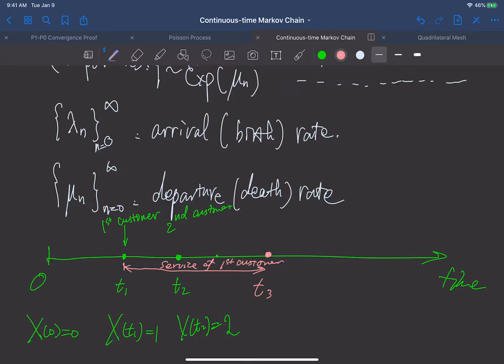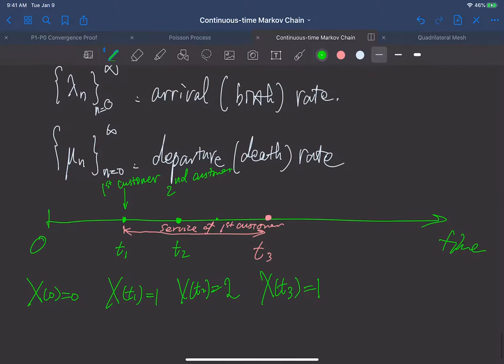Then at this t_3, it becomes 1 again. So there is only one person in the system.